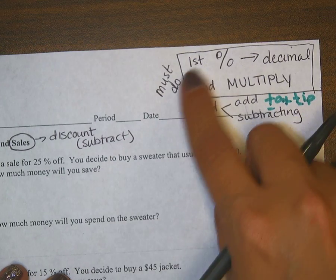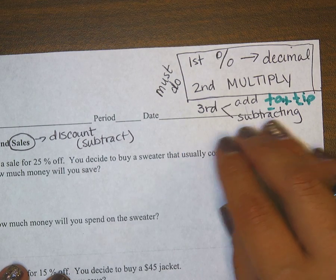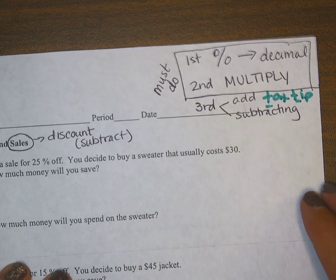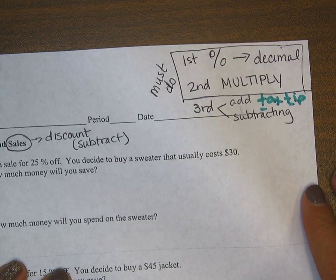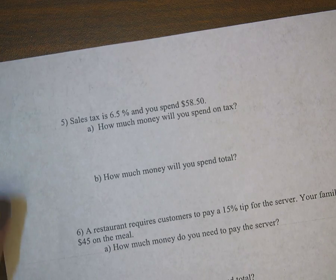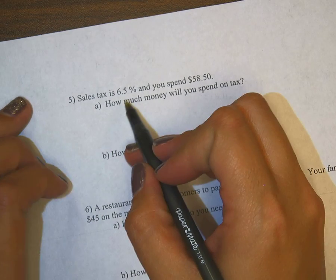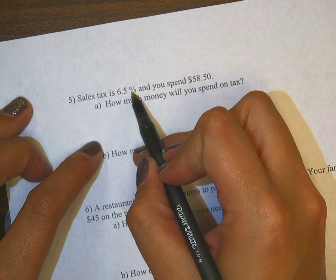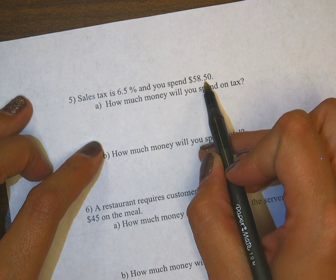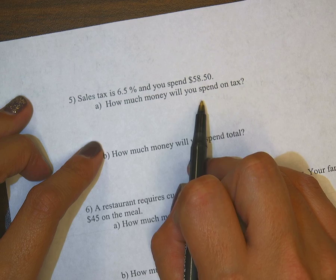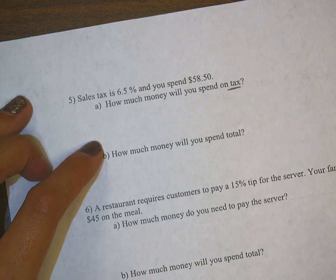Take note of these kind of reminders. I thought that maybe number 5 was the most difficult, so I went ahead and we're going to work that out. It says sales tax is 6.5% and you spend $58.50. Part a: How much money will you spend on tax?